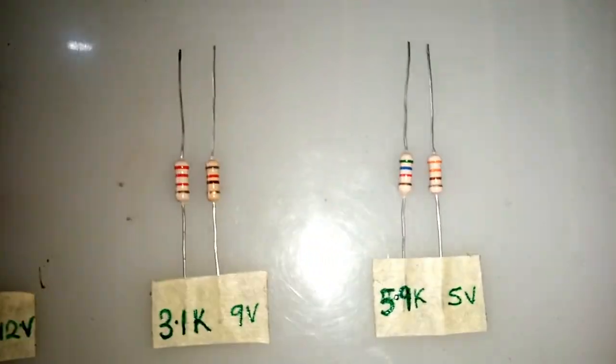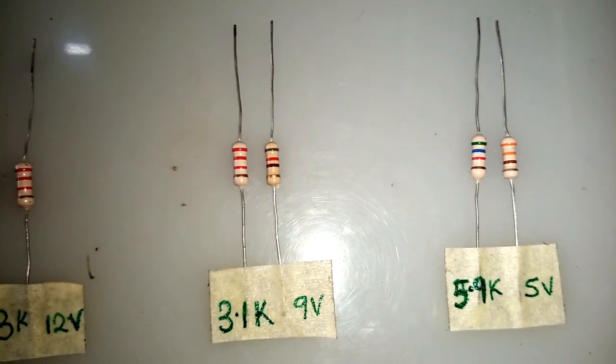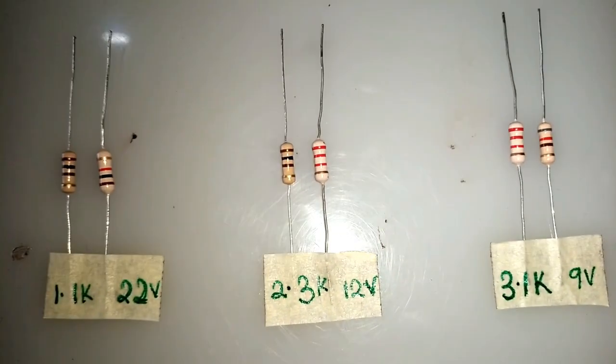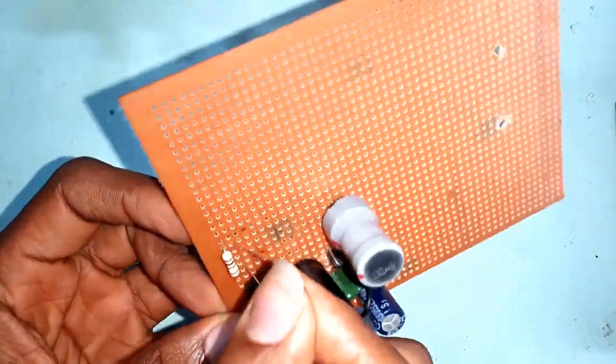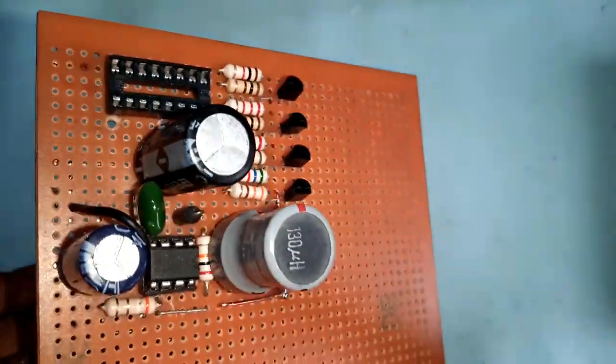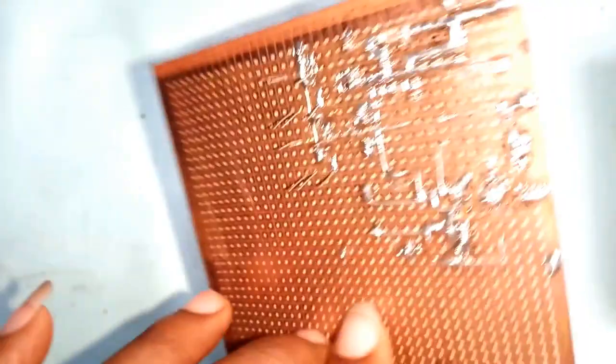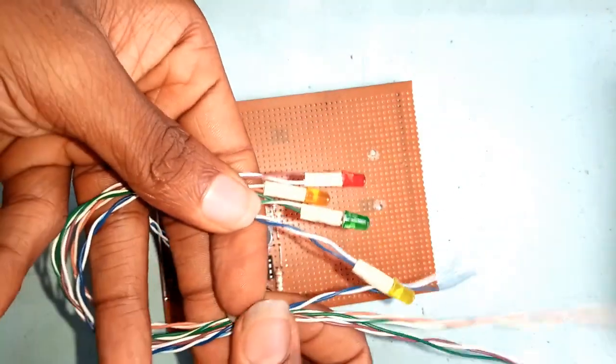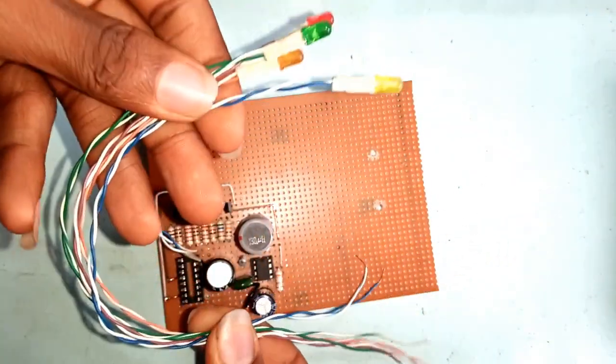For the first voltage that I want, I calculated the resistor configuration and I assembled the components. After soldering, the board was looking like this.